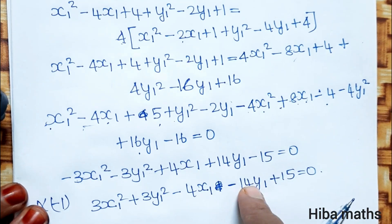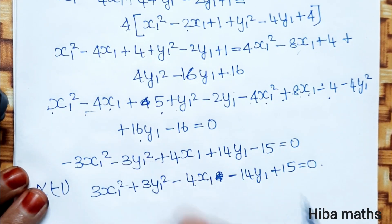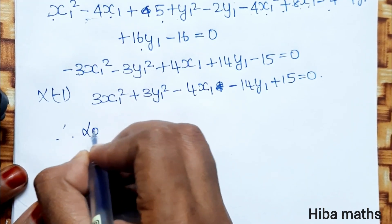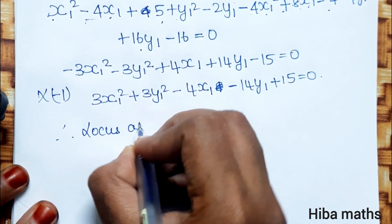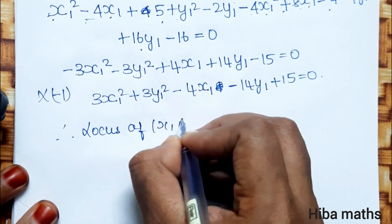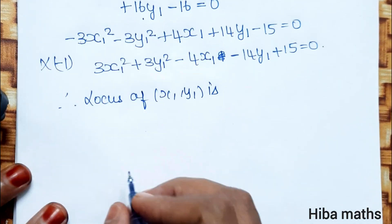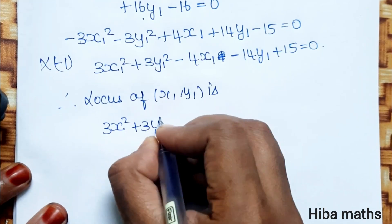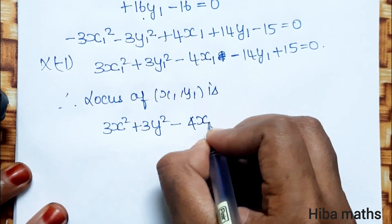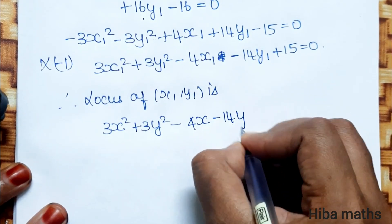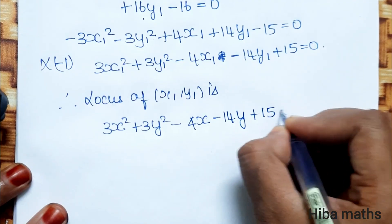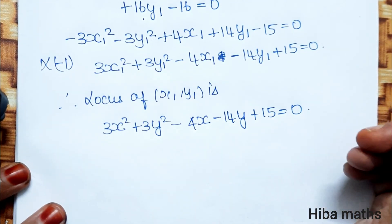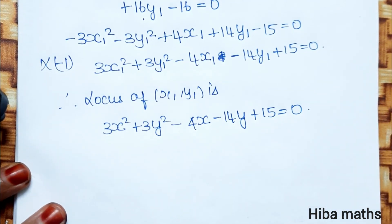Therefore, the locus of P(x1, y1) is: 3x² plus 3y² minus 4x minus 14y plus 15 equals 0.